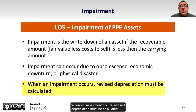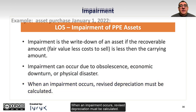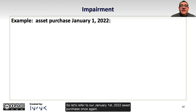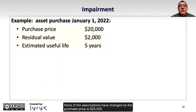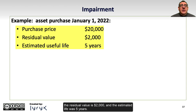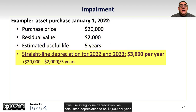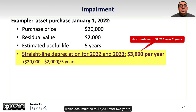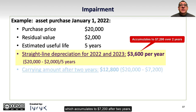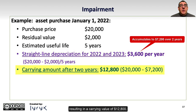When an impairment occurs, revised depreciation must be calculated. Let's refer to our January 1st, 2022 asset purchase once again. None of the assumptions have changed: the purchase price was $20,000, the residual value was $2,000, and the estimated life was 5 years. Using straight-line depreciation, we calculated depreciation to be $3,600 per year, which accumulates to $7,200 after 2 years, resulting in a carrying value of $12,800.